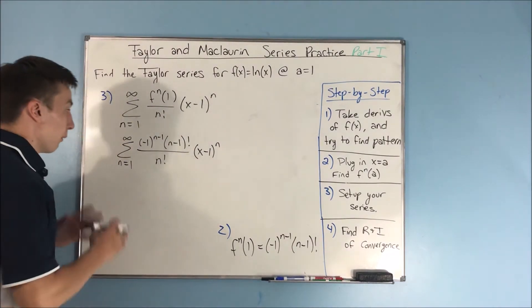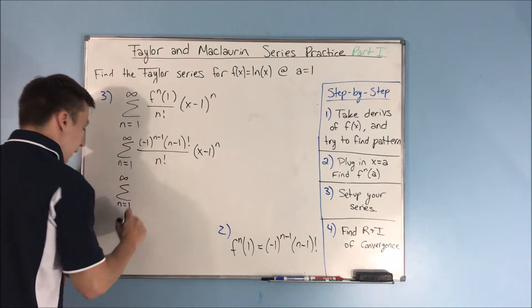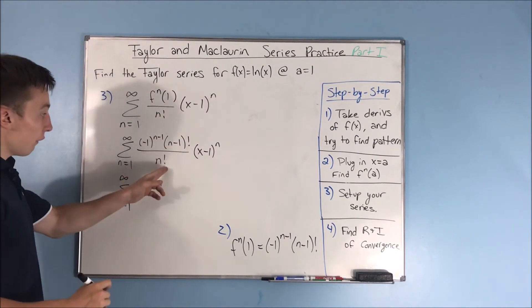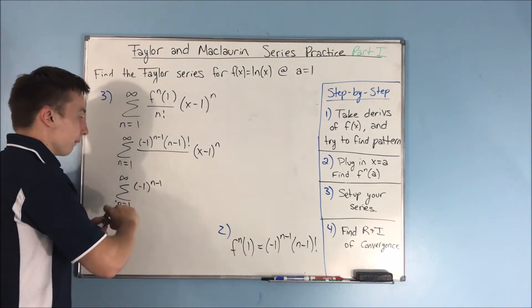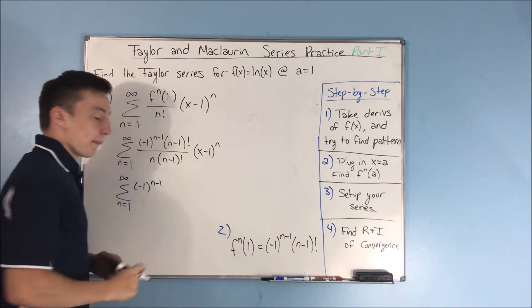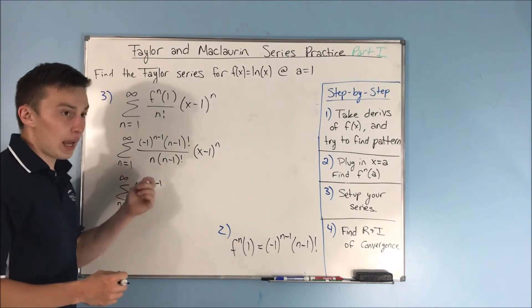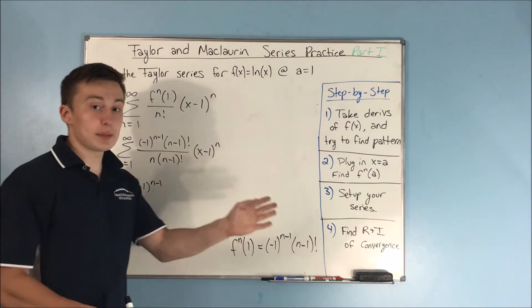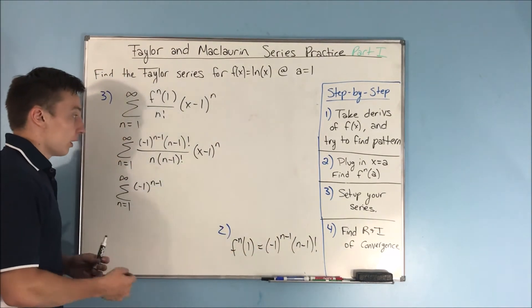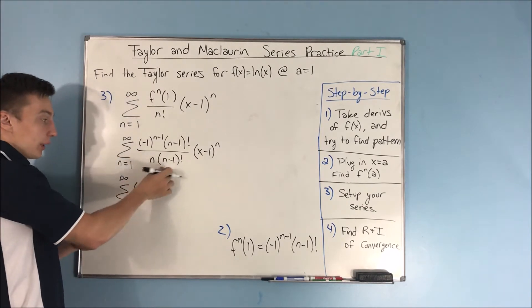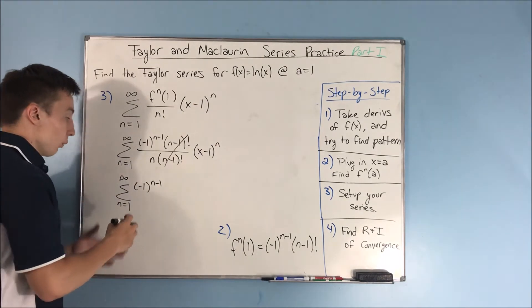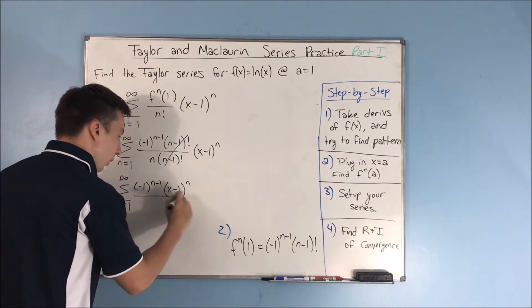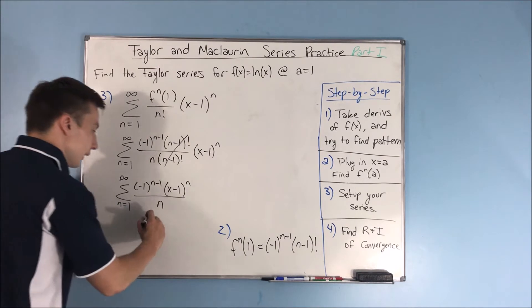We can simplify this. We get the sum from n equals 1 to infinity of negative 1 to the n minus 1. Now, n factorial is the same as n times n minus 1 factorial, so we can cancel the n minus 1 factorials. Pulling out the n, we're left with negative 1 to the n minus 1 times x minus 1 to the n, all over n. This is our Taylor series.